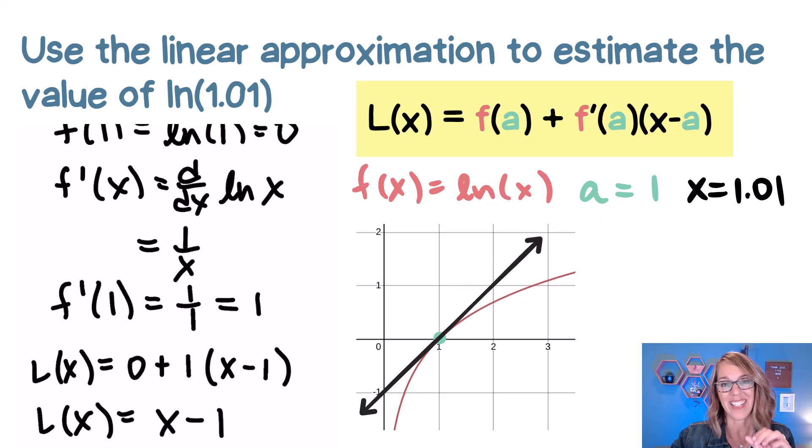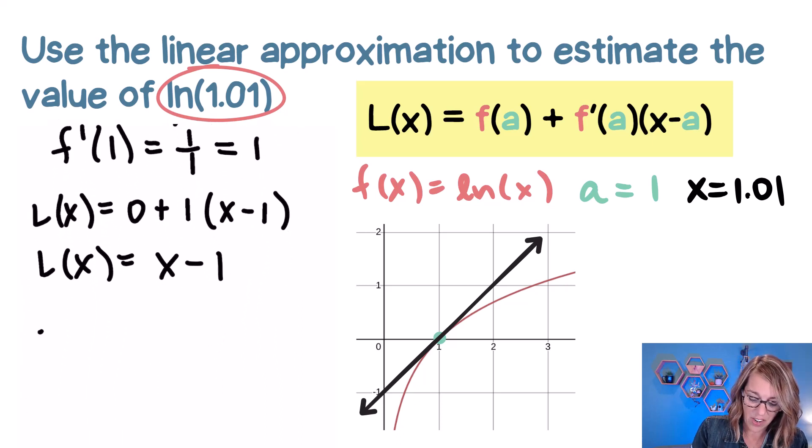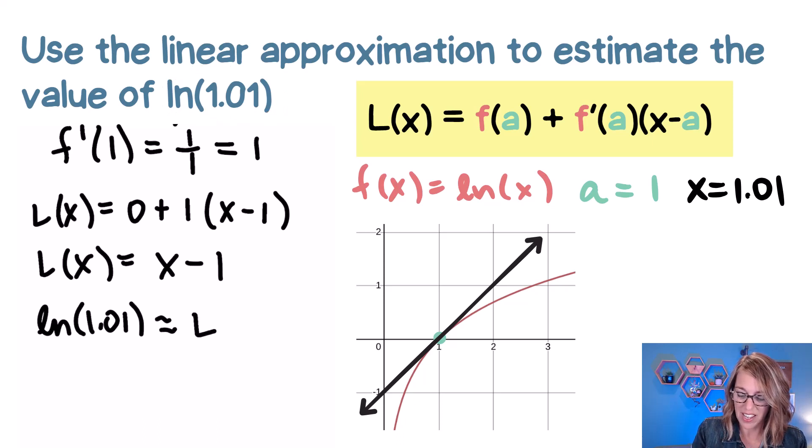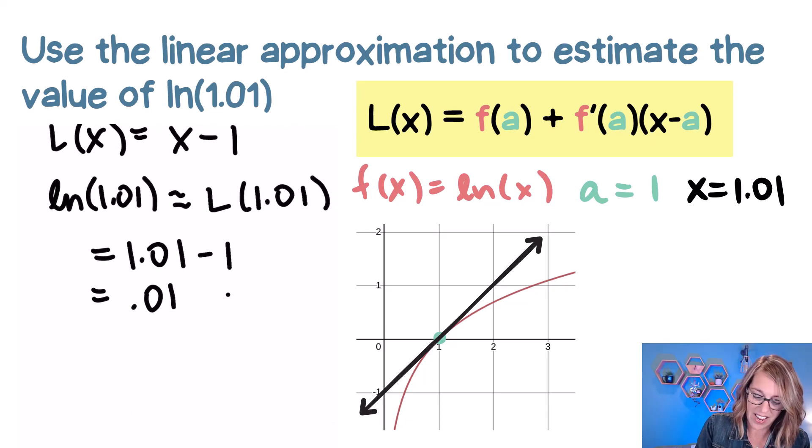Here's what that tangent line looks like. What we're going to do next is to estimate the natural log of 1.01 using this linearization. So the natural log of 1.01, if I use the line to evaluate this, it's approximately the linearization at 1.01. That linearization is 1.01 minus 1, which is equal to 0.01.